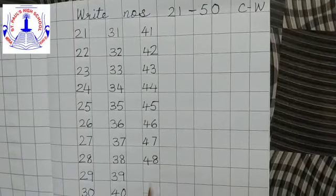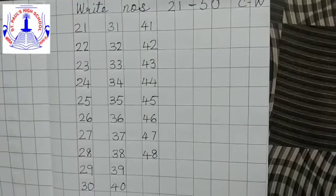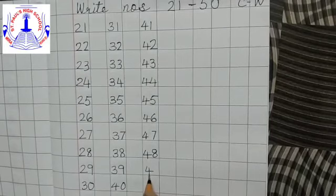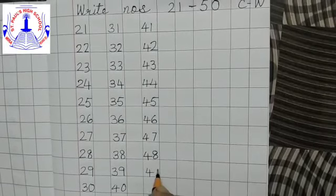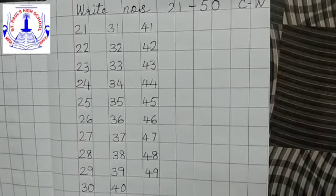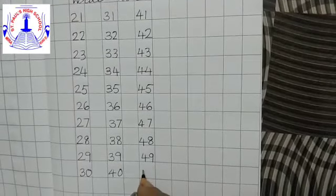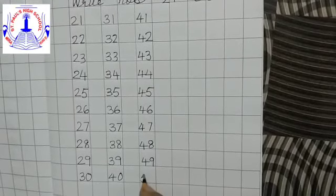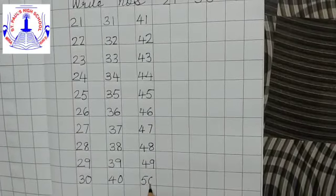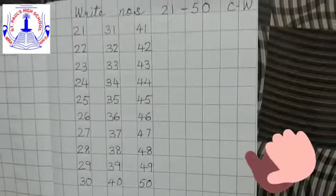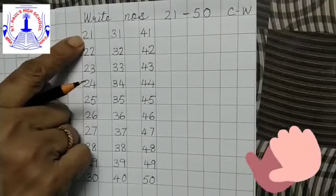4 and 9, 49. 5 and 0, 50. Now we have completed writing numbers from 21 to 50.